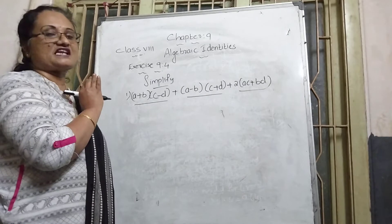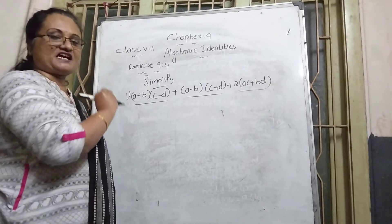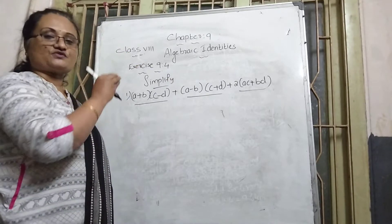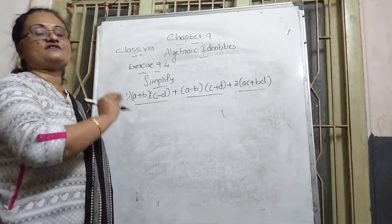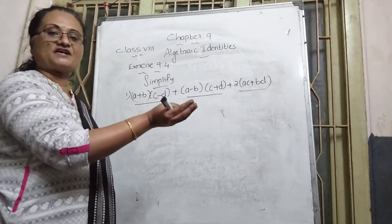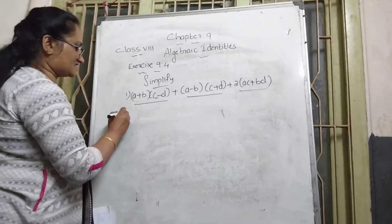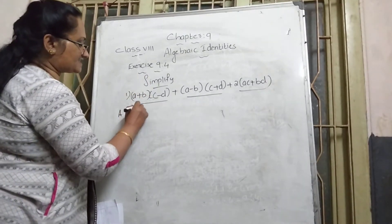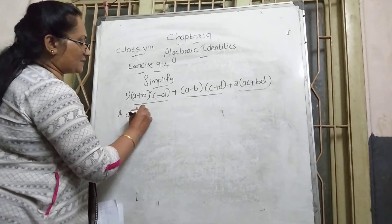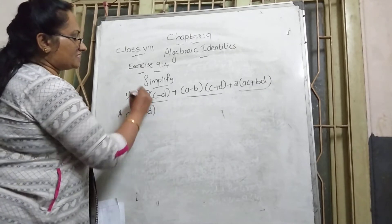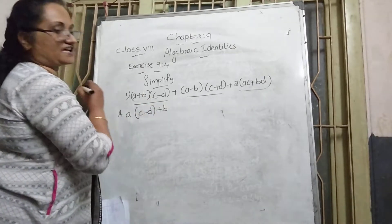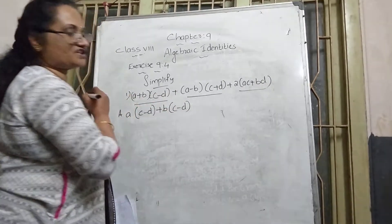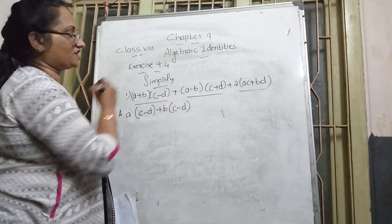From the last class we learned: take the first term of the first bracket and multiply with the second bracket, then take the second term with its sign and multiply with the second bracket. So here, first term a is multiplied with (c − d), and then plus b is multiplied with (c + d).